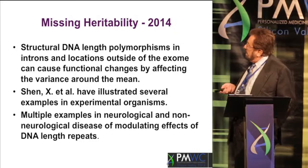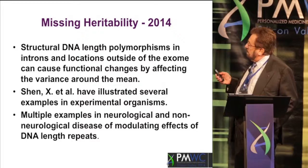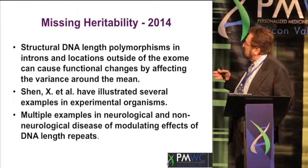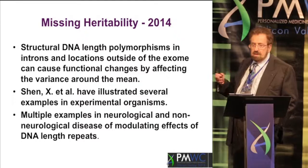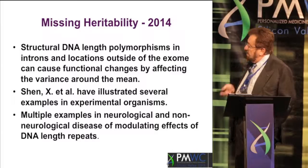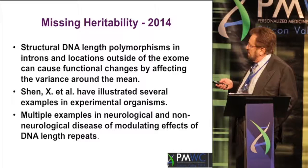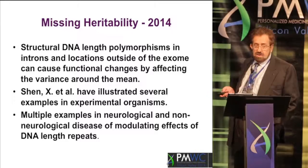Everybody's been talking about missing heritability. I'm going to tell you about structural DNA length polymorphisms, which are in introns and located outside of the exome and genome, that can cause functional changes by affecting the variance around the mean of that gene. Shen et al. have illustrated several examples in experimental organisms. It isn't unique to humans, but I'm going to give you multiple examples in neurologic and non-neurologic complex diseases.